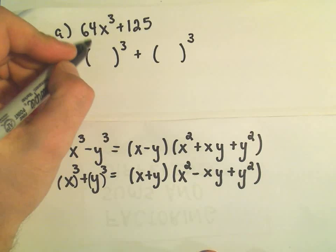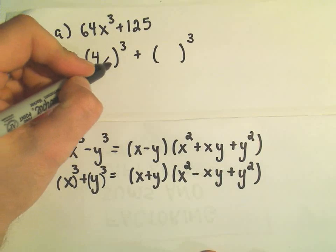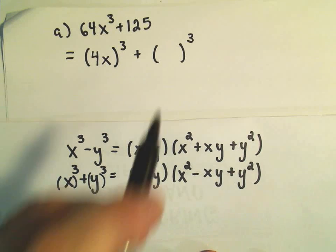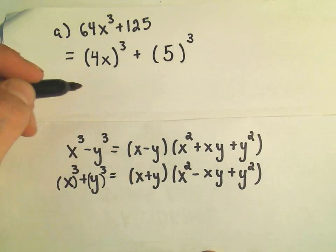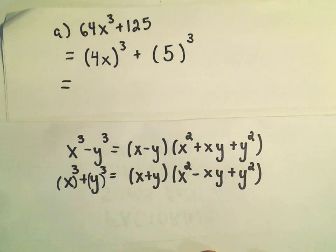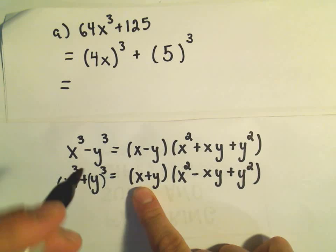Well, to get 64, we would need 4 cubed, and to get x³, we would just need to stick an x in there. Likewise, to get 125, we would need 5 cubed. Now I'm going to use this formula. So instead of just x and y, I've got 4x and I've got a positive 5.